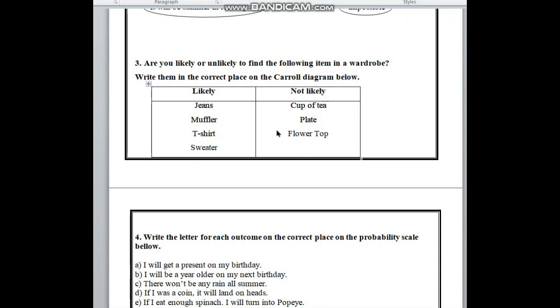From this picture, we have to pick out which item we likely or unlikely put in our wardrobe. Look, jeans, muffler, t-shirt and sweater, we put in wardrobe likely.